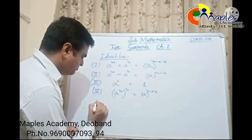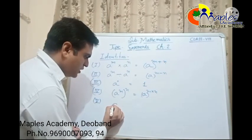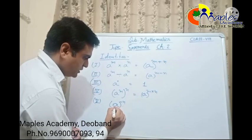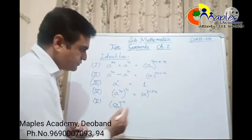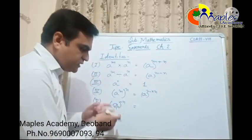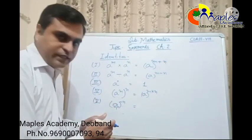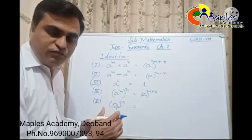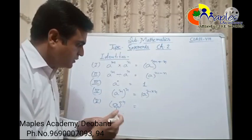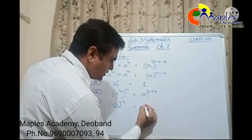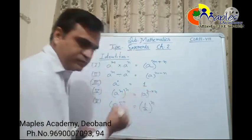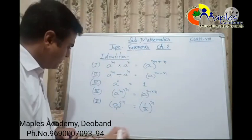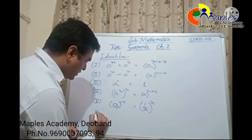Identity number five: if we have a raise to the power minus n, we first convert it into a rational number — a upon 1. Now if we reciprocal the base, the power becomes positive, giving us 1 upon a raise to the power n.